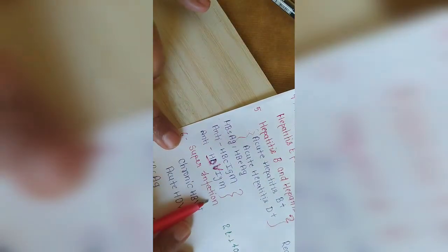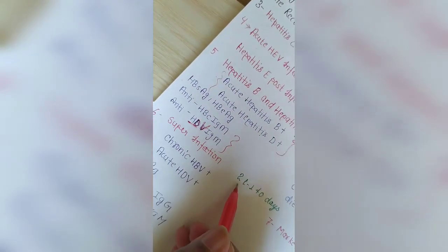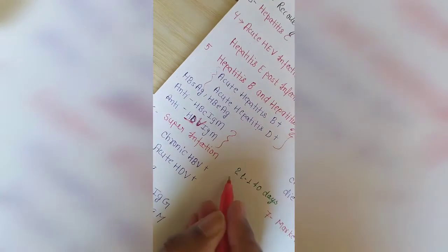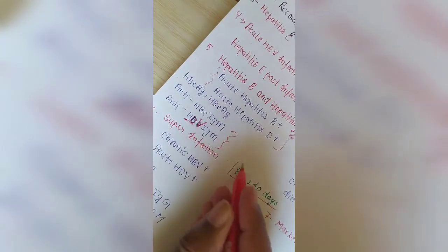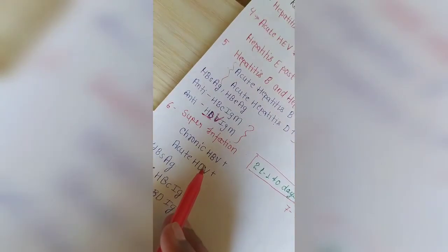Now the super-infection. Super-infection incubation period is 21 to 140 days. It is a chronic process, super-infection means...